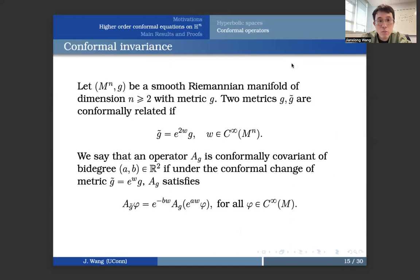And since it is called a conformal operator, we would like to know if it has a conformal invariance and in what sense. So generally, if we have a smooth Riemannian manifold of dimension n greater or equal to 2 with metric g, we say two metrics, g and g tilde, are conformally related if they are differed by a positive function. Basically, you have g tilde equals e to the power W times G. W is a smooth function.